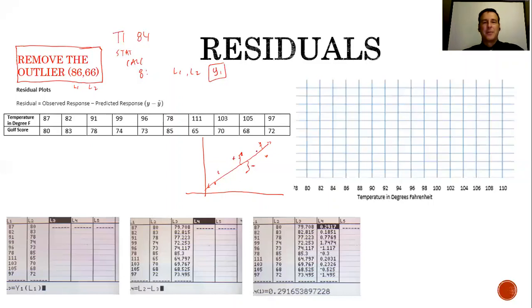For ours we have 96. I'm going to use this as the very first example. Residual is your observed y minus your predicted y. I'm doing this for 96, so my observed outcome for a temperature of 96 degrees was a score of 73.